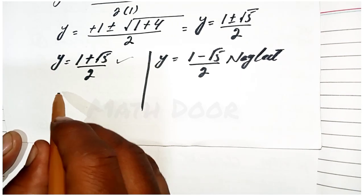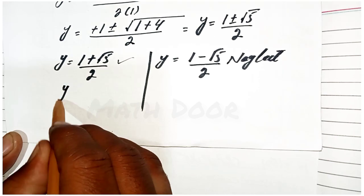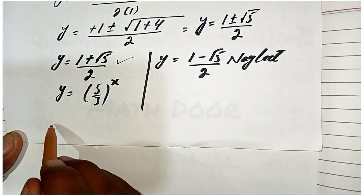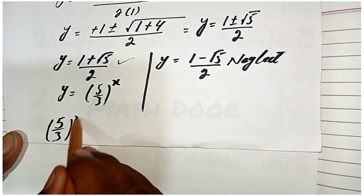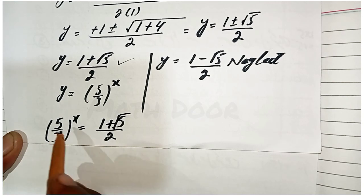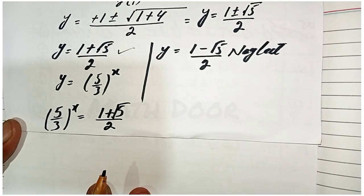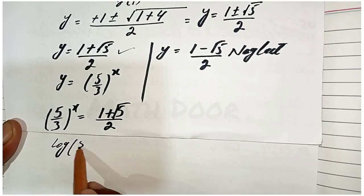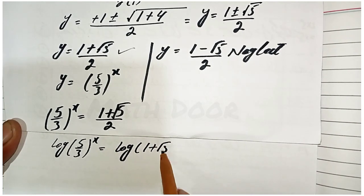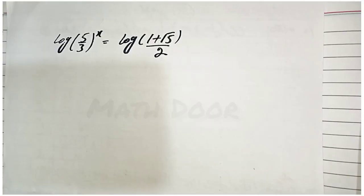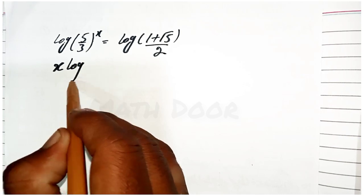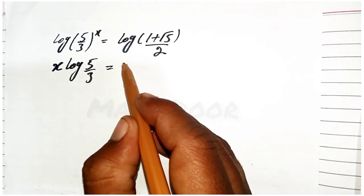We solve using the first factor. Recalling that y = (5/3)^x, we have (5/3)^x = (1 + √5)/2. Taking the log of both sides: log(5/3)^x = log((1 + √5)/2). Bringing the power x down on the left: x·log(5/3) = log((1 + √5)/2).